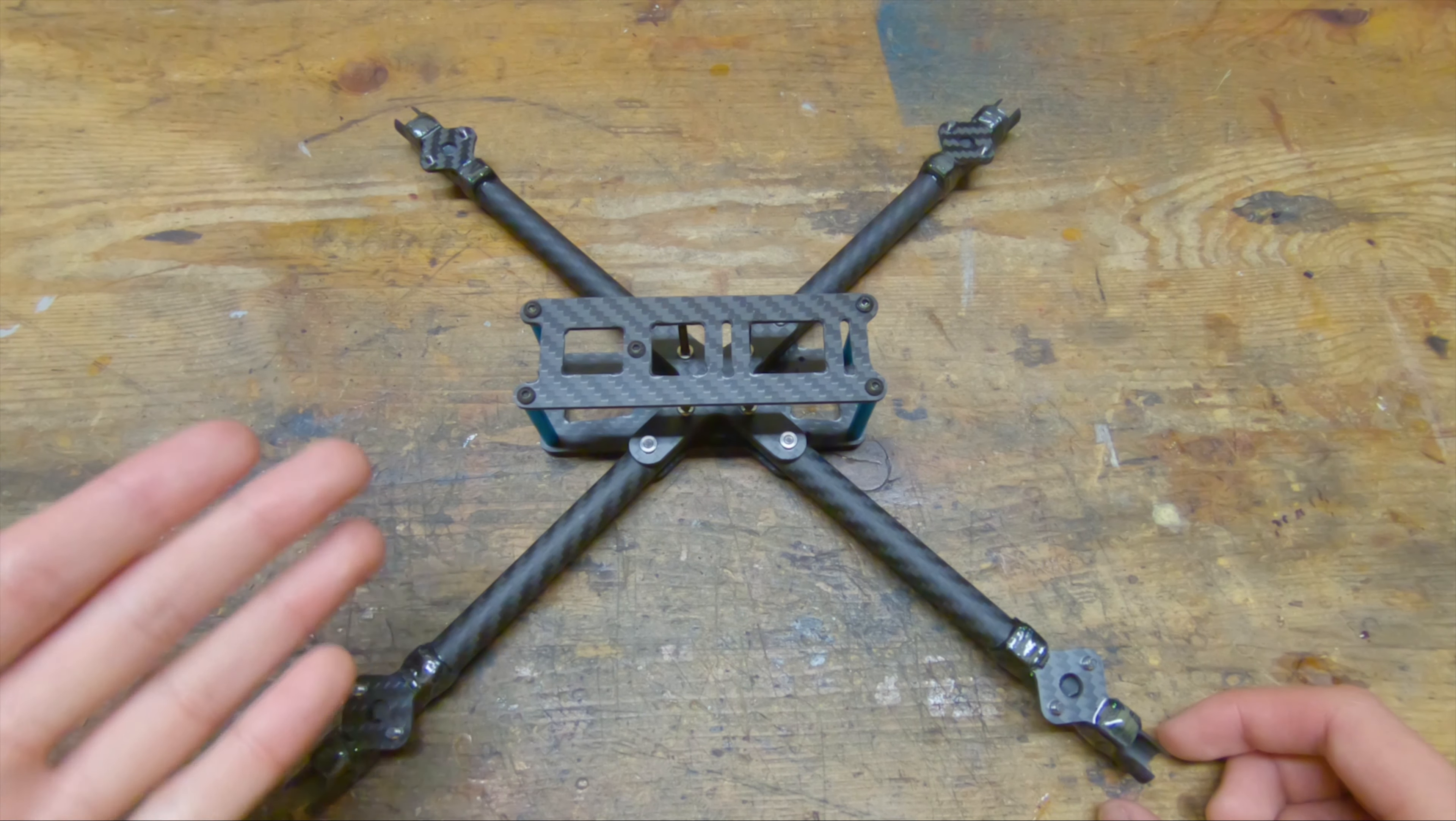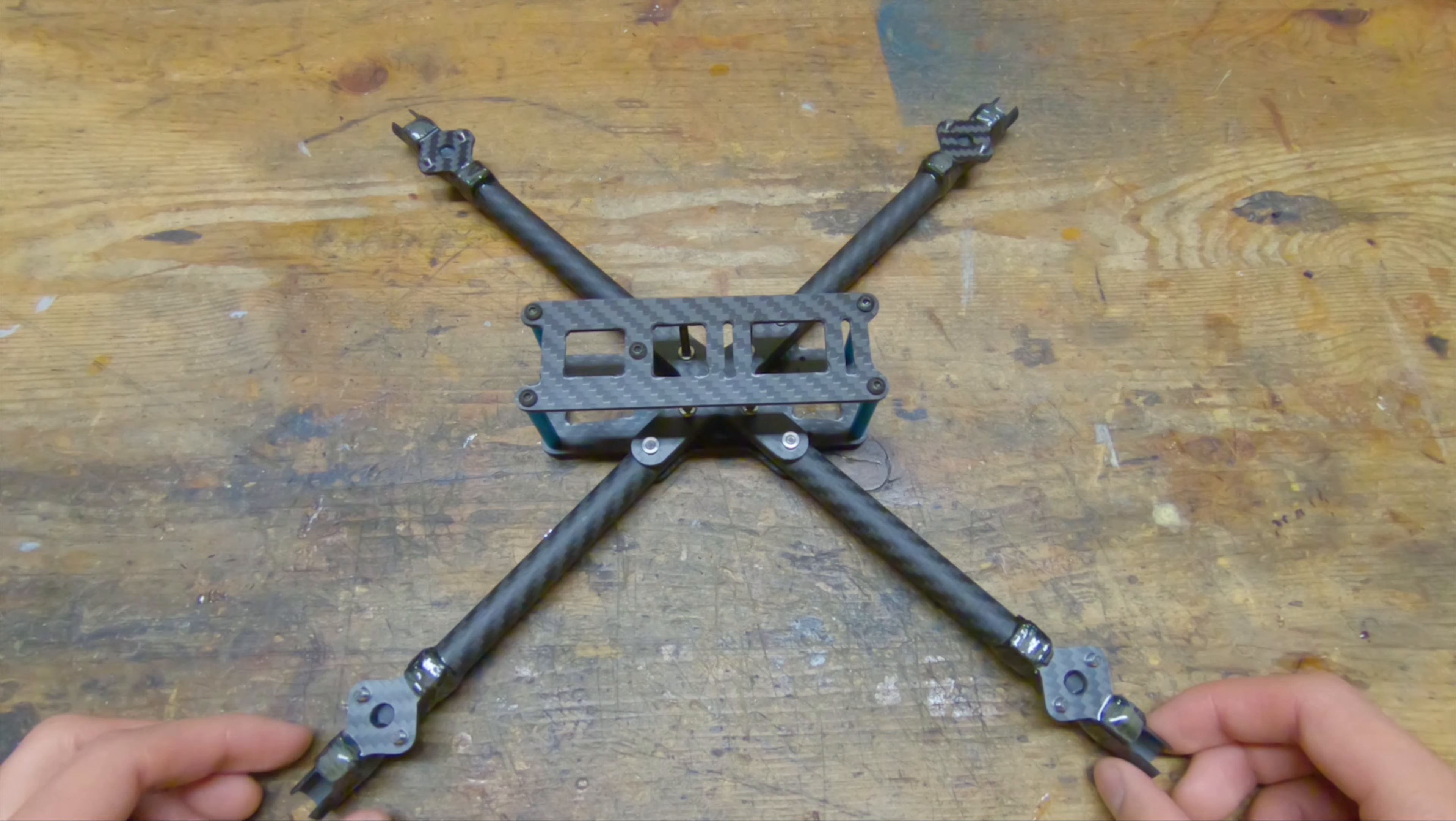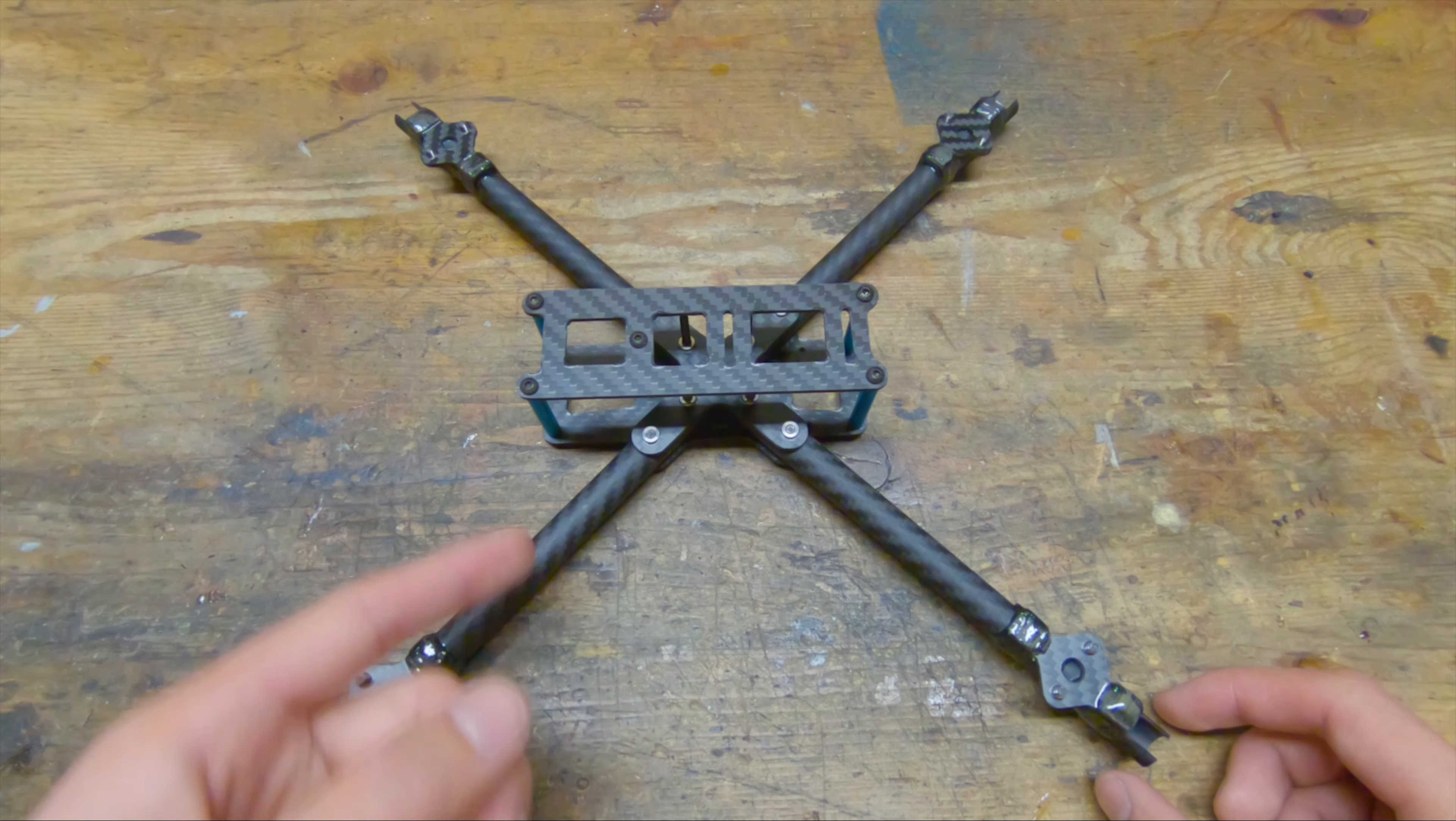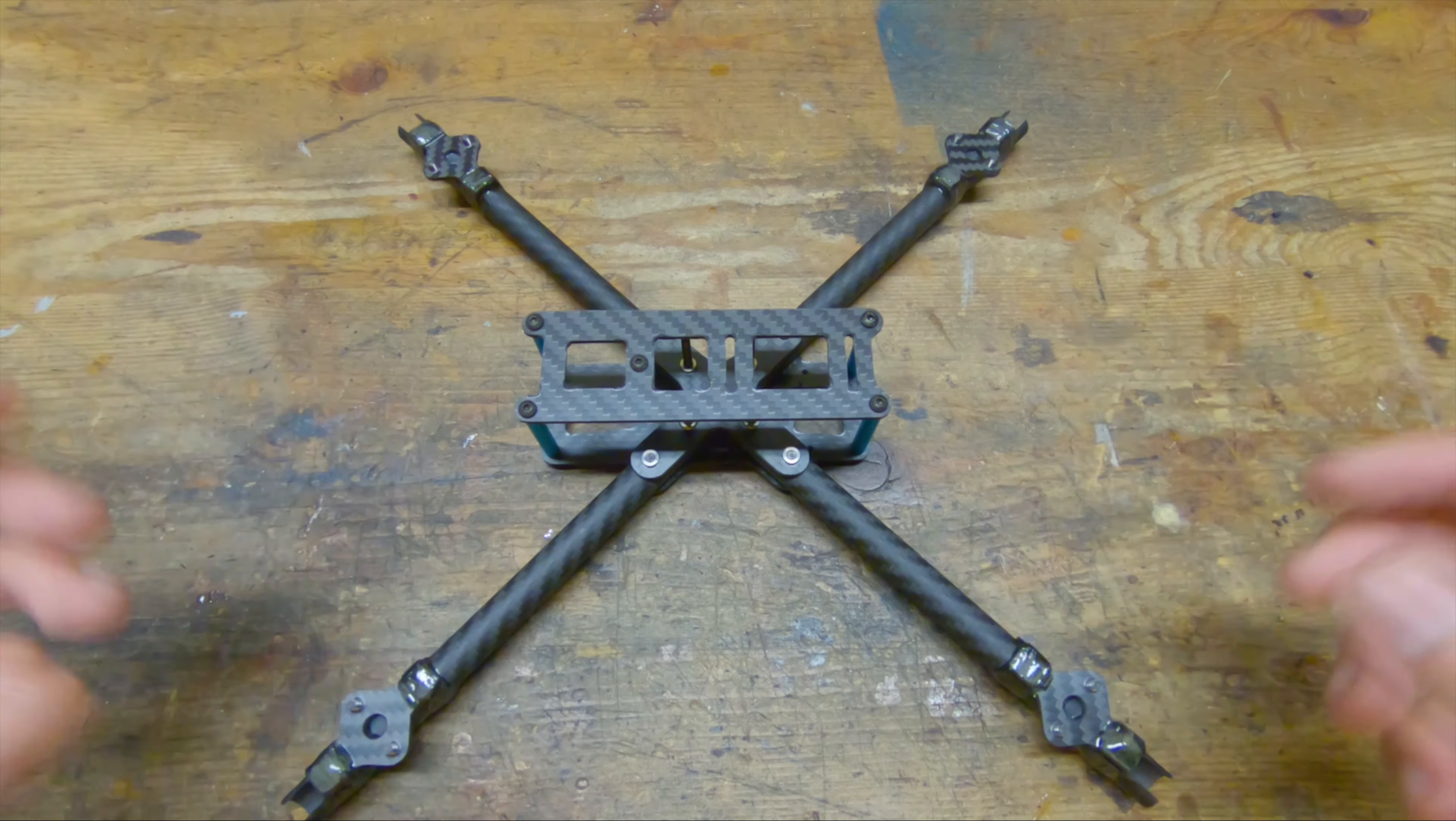The Tubular Quad fits six inch props with space between all the props to give all the props clean airflow, which helps avoid tuning issues. It is a true X configuration to give similar pitch and roll response. It is very light. The version 6 comes in at 102 grams, which is 0.6 grams lighter than version 5.